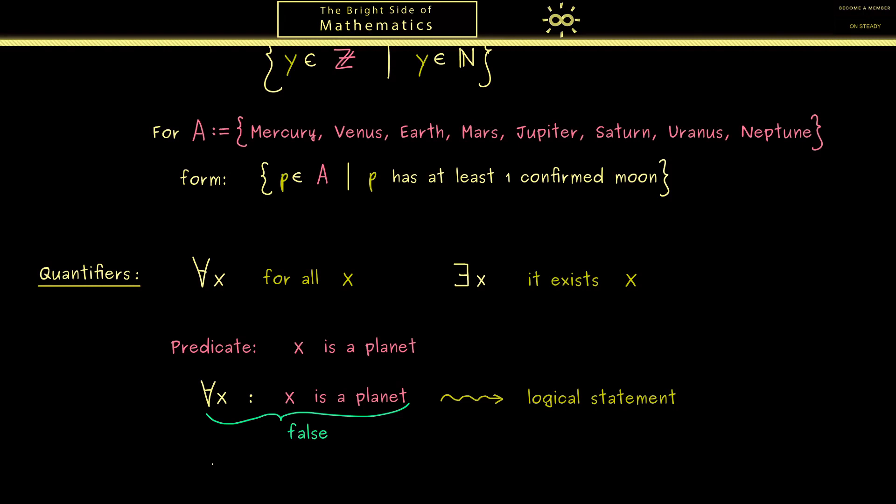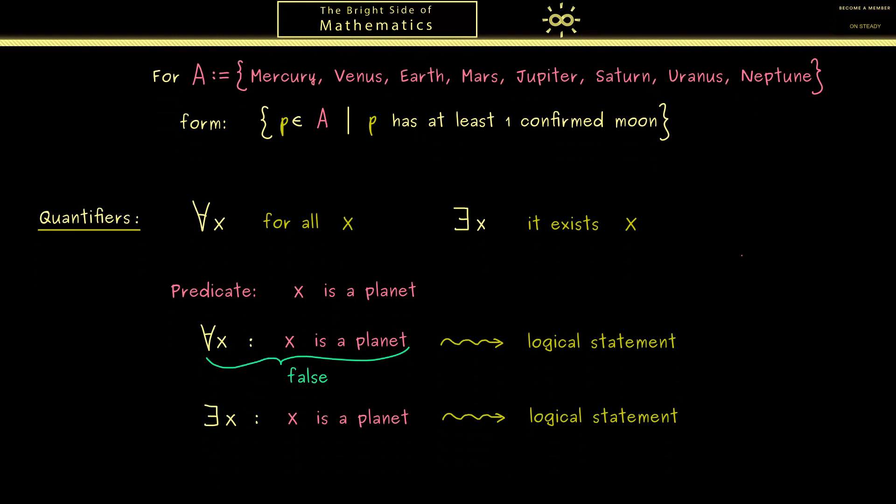In the same way the combination with the exists works. So 'it exists x: x is a planet.' Also here the colon helps reading it—you would say 'there exists x such that x is a planet.' So this means that we have at least one object that satisfies the predicate. In other words, it's a logical statement that can be either true or false. For this example, since we already know we have 8 planets, this one is true. Hence always keep in mind the exists quantifier always has an 'at least' inner meaning.